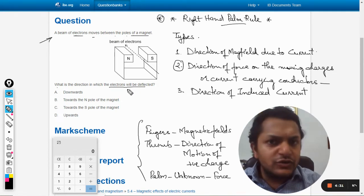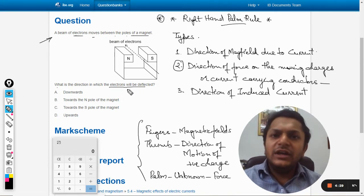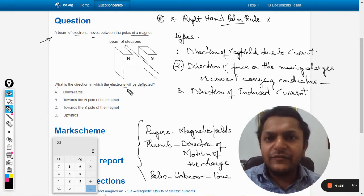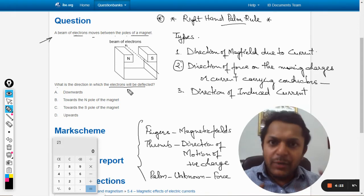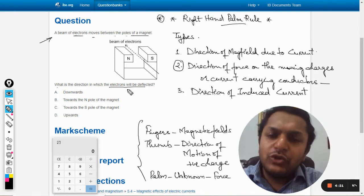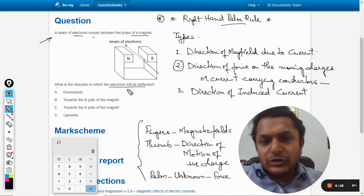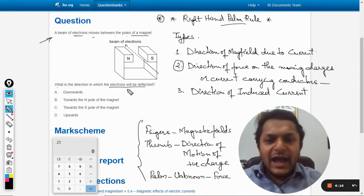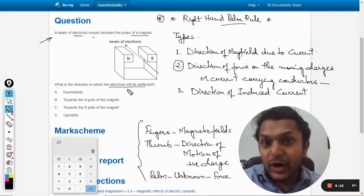So right hand rule is used in these kind of questions, left hand rule is used for... sorry, left hand rule is used here, right hand Fleming's rule is used for induction. But I prefer not using Fleming's hand rules because they're quite confusing. So instead of Fleming's hand rule I use right hand palm rule.